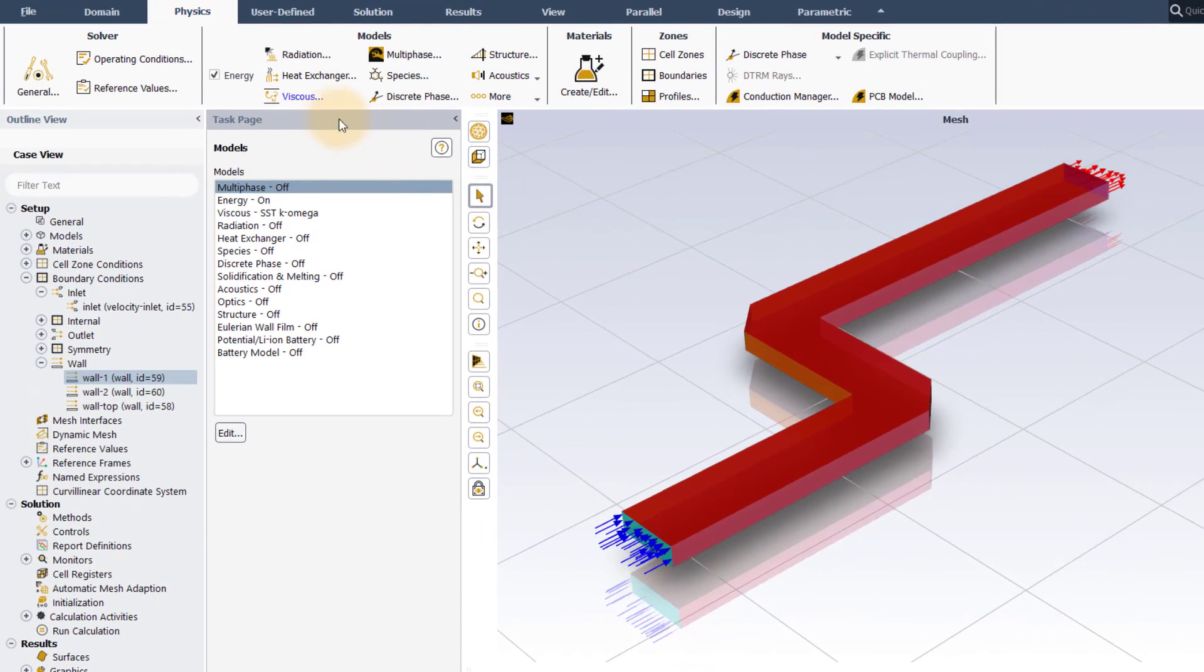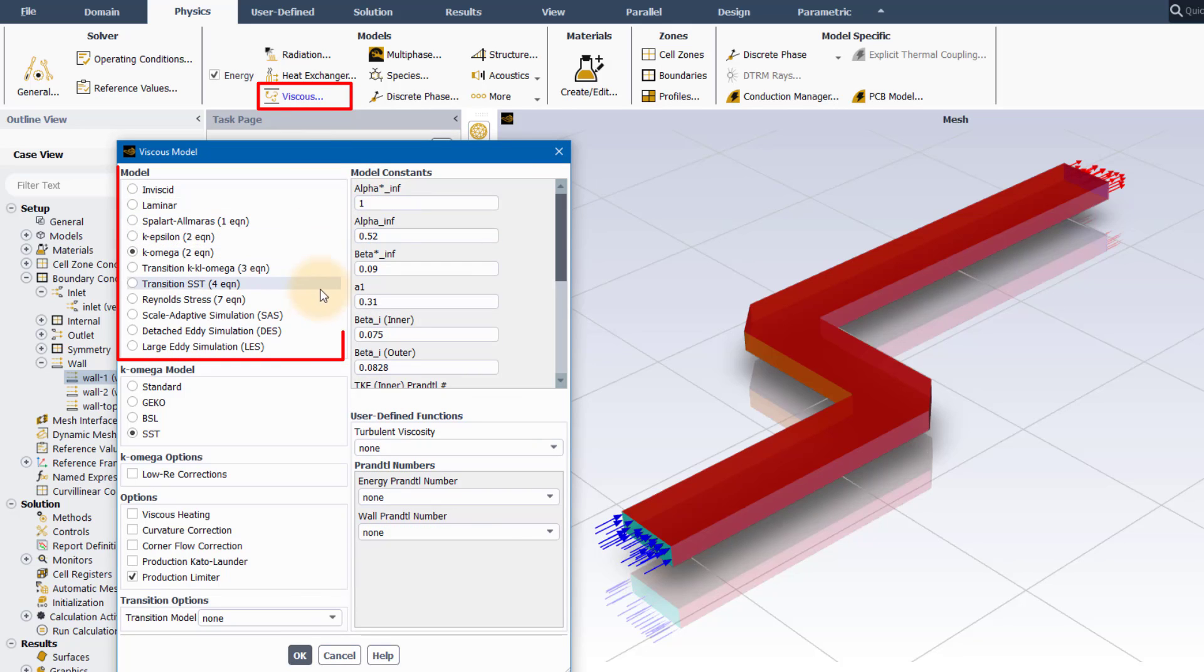The turbulence model is prescribed in the viscous model panel. There are many turbulence models in the panel, each with applicability to different types of fluid flows. ANSYS recommends the use of the default SST K-Omega model, as this is suitable for most turbulent flows.